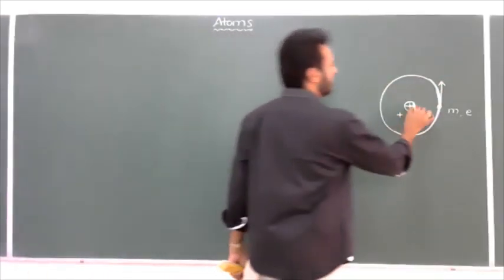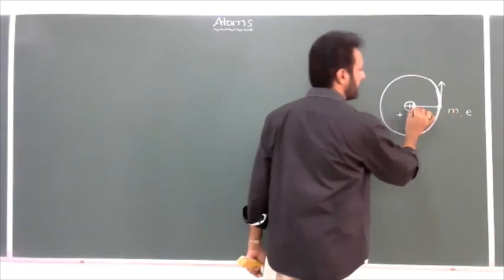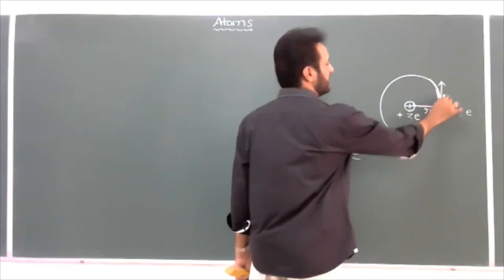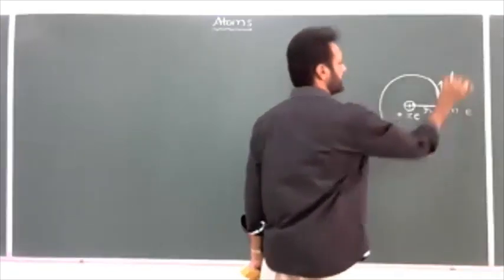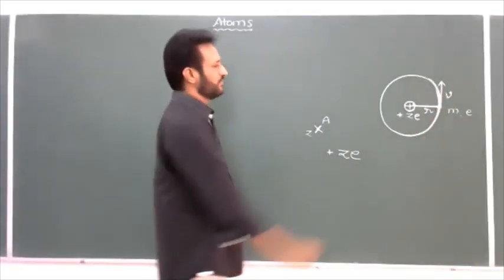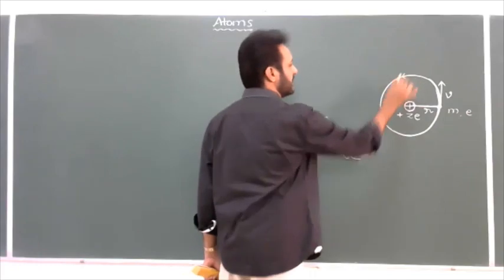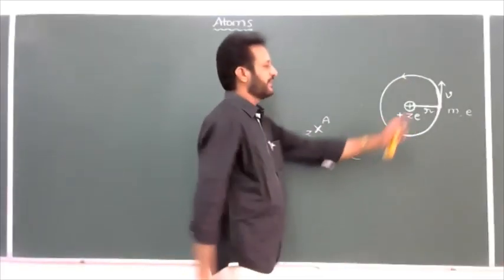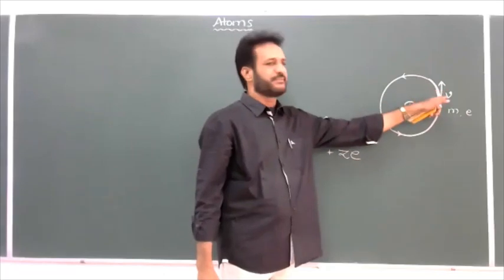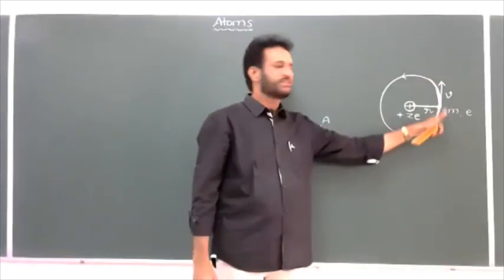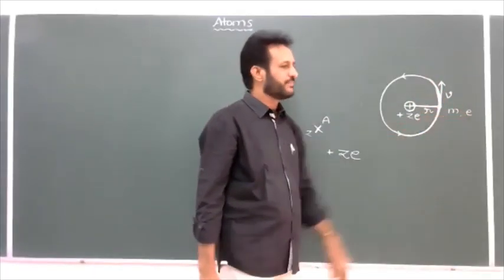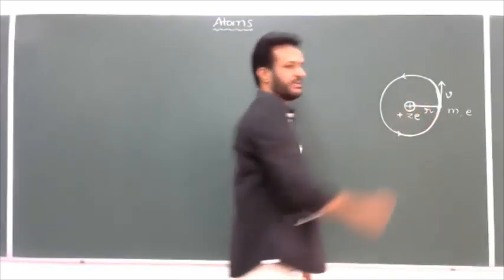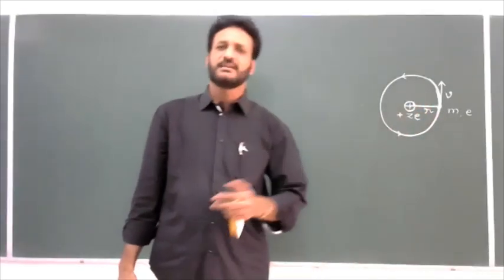One electron having mass m and charge e is revolving around the nucleus in a circular orbit. The radius of the circular orbit I will take as r — from the central part to the circular orbit, the radius is equal to small r. The velocity of electron in this orbit is equal to v. Now the electron is revolving around the nucleus in a circular orbit of radius r with velocity v.